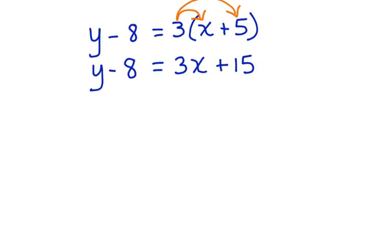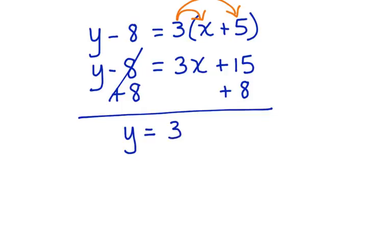Now we want to get y alone, so let's add 8 to both sides of this equation. These cancel, bring down the y. 3x can just come down. And we have 15 plus 8, which is equal to positive 23.